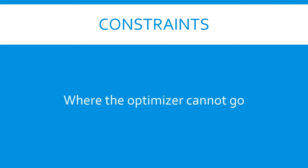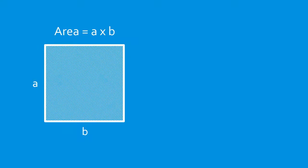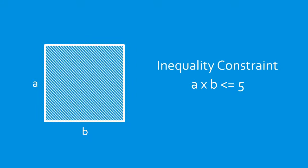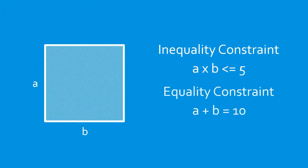Constraints describe where the optimizer cannot go, or additional conditions that must be met for a successful solution. For example, when optimizing the size of a square, we could add the constraint that the length of the two sides multiplied together is less than 5. This is an inequality constraint. We can also add equality constraints, such as a plus b equals 10, or a times b divided by a plus b equals 3.